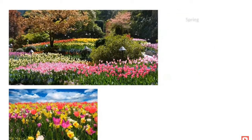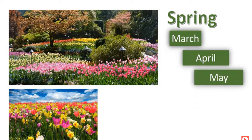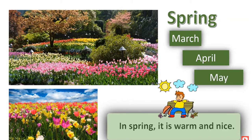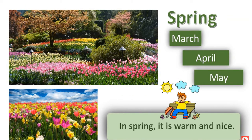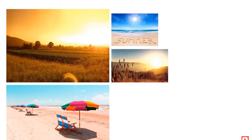Spring — it is three months: March, April, and May. In spring it is warm and nice.